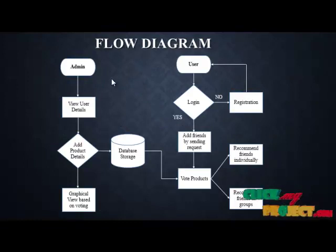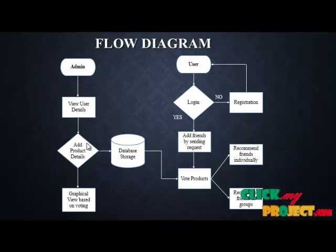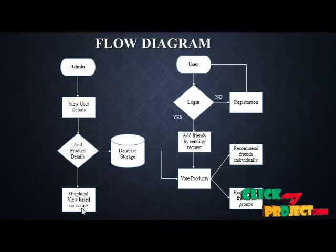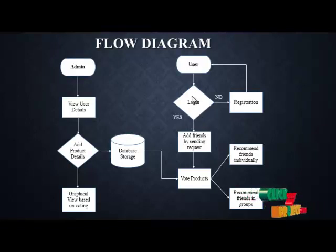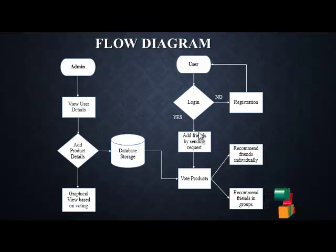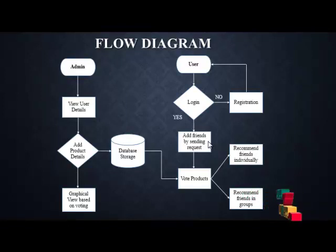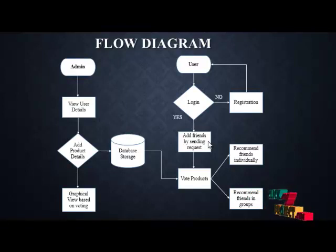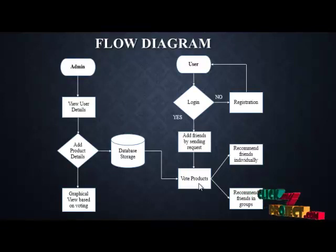Here is the flow of our process. In the admin module: view user details, add product details like product ID, product name, product quality details, and other product features — all stored in the database. Admin also views the graphical view based on user voting. For the user: initially registers with basic details, then logs in with registration ID and password. If login fails, the user must register again. Users add friends by sending requests, and other users accept requests based on their interest by viewing the user profile — a vice versa operation.